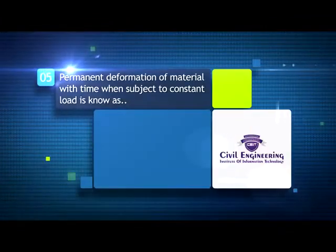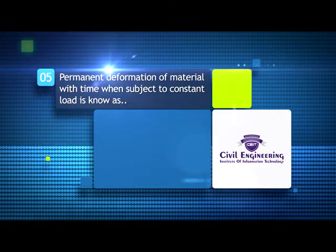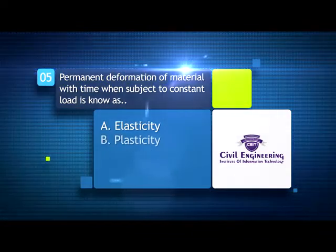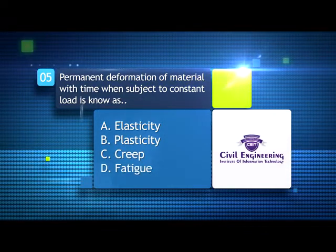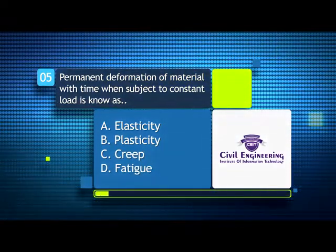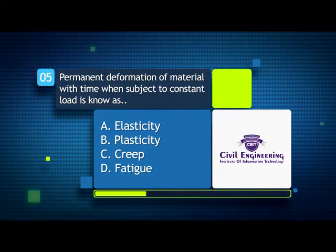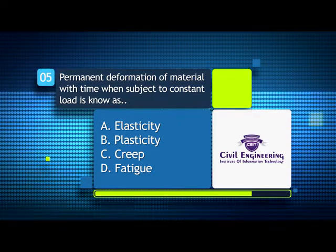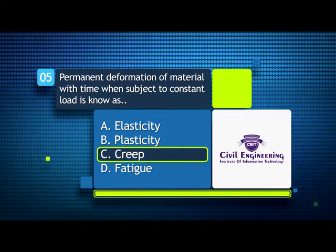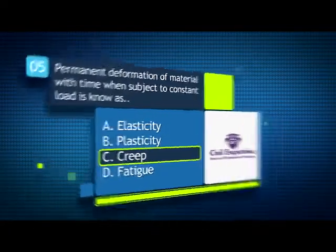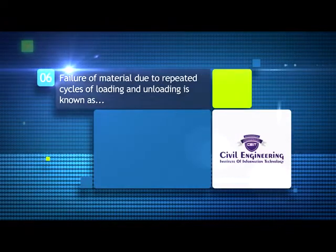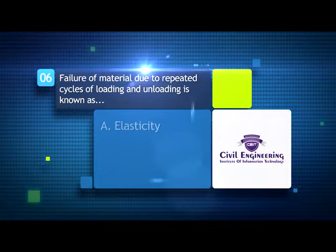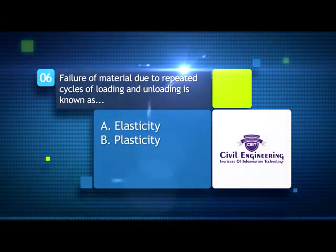Permanent deformation of material with time when subjected to constant load is known as: A) elasticity, B) plasticity, C) creep, D) fatigue. Failure of material due to repeated cycles of loading and unloading is known as: A) elasticity, B) plasticity, C) creep, D) fatigue.